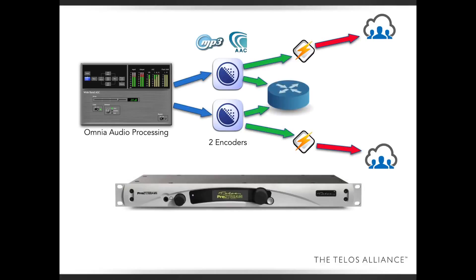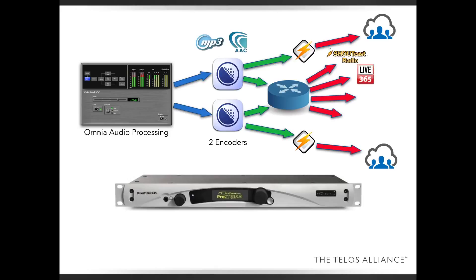The real way you want to stream out to the rest of the world is through content distribution networks, or CDNs. Inside the ProStream there's a routing matrix and you can take either encoder and assign it to four different outputs. You can set the parameters for each output for different kinds of streaming servers — for example, shoutcast, icecast, Live365, a Wowza server, or a CDN like Akamai. You have choices, and you select the correct one for your chosen content distribution network.